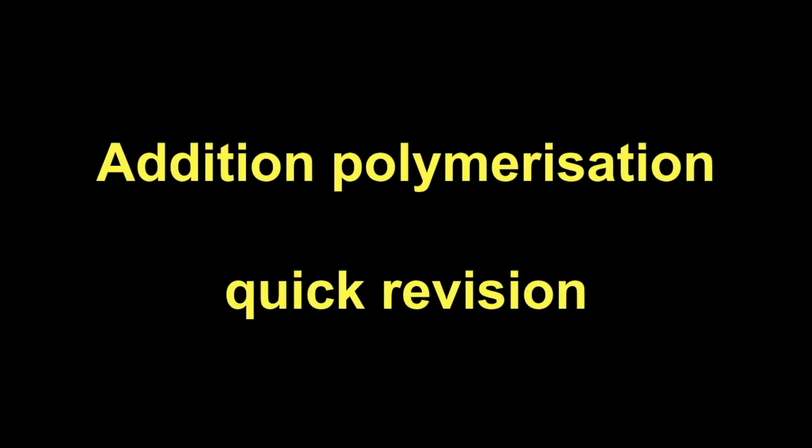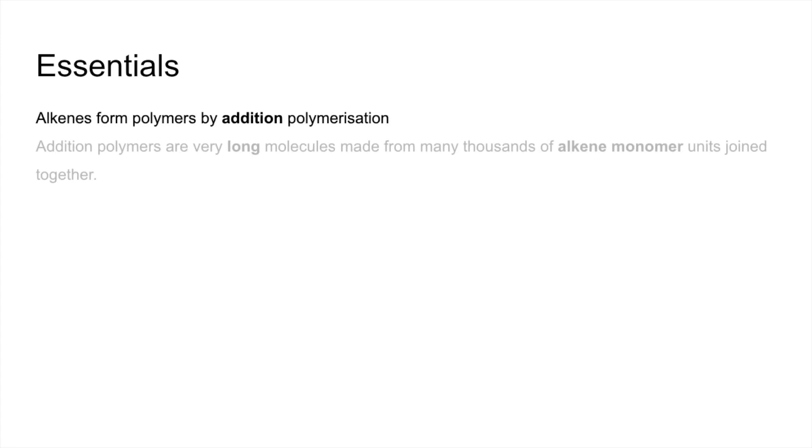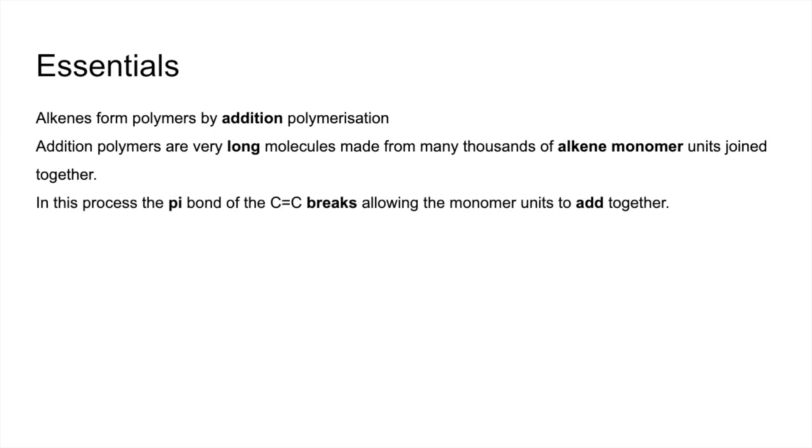Quick revision video on addition polymerization. We'll start with some essentials. Alkenes form polymers by addition polymerization. Addition polymers are very long molecules made from many thousands of alkene monomer units that are joined together. In this process, the pi bond of the carbon-carbon double bond breaks, allowing the monomer units to add together.